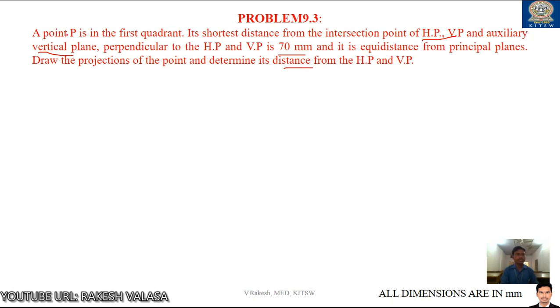Dear students, you can see here the point is in the first quadrant. What is first quadrant? How to tell the point is in first quadrant? That means, let us take your notebook. This is your horizontal plane and vertical plane. The point is above HP and in front of VP. In this condition, the point is in first quadrant.